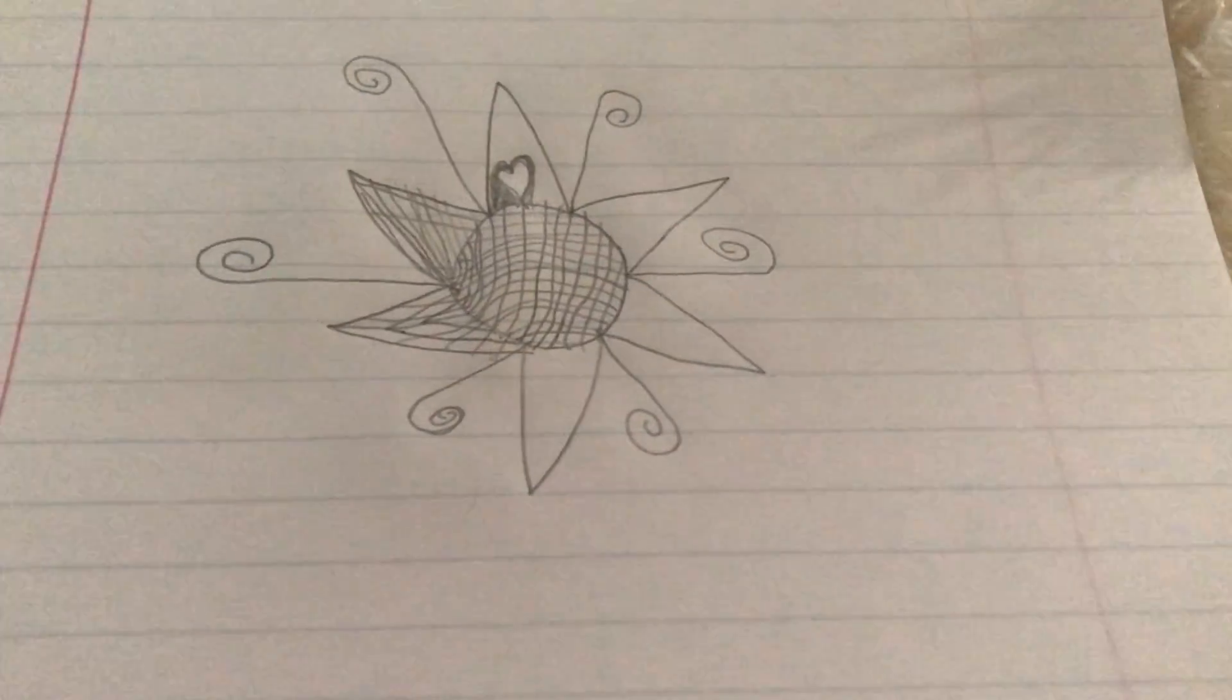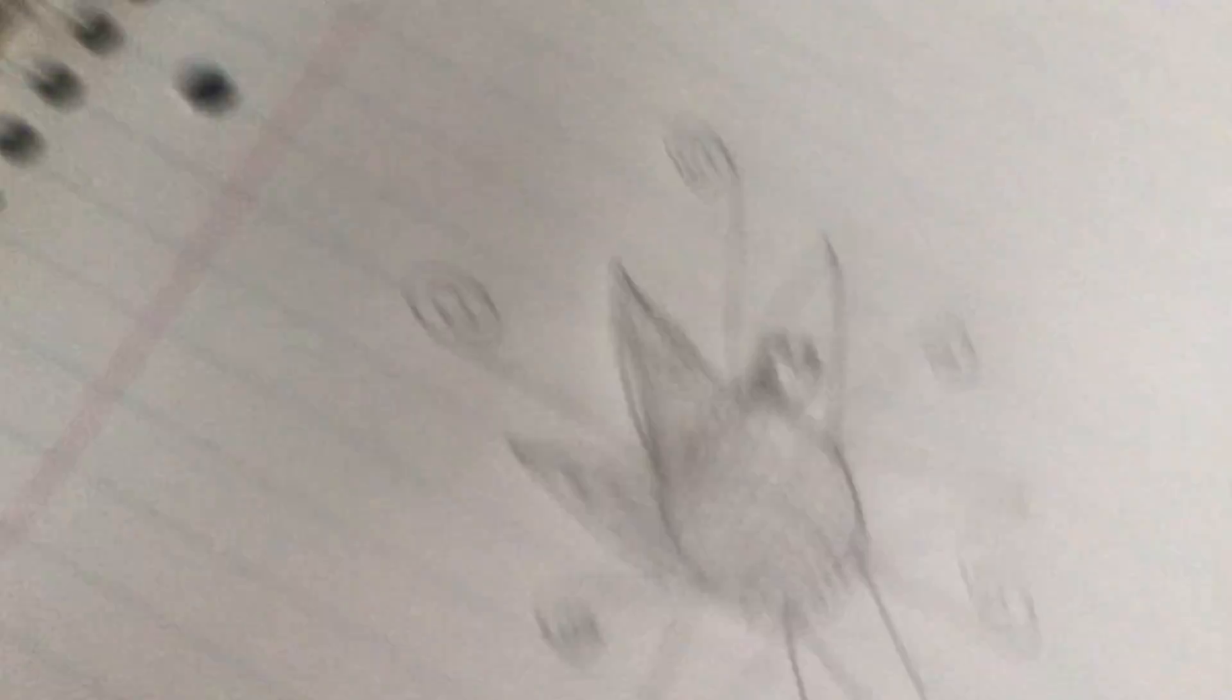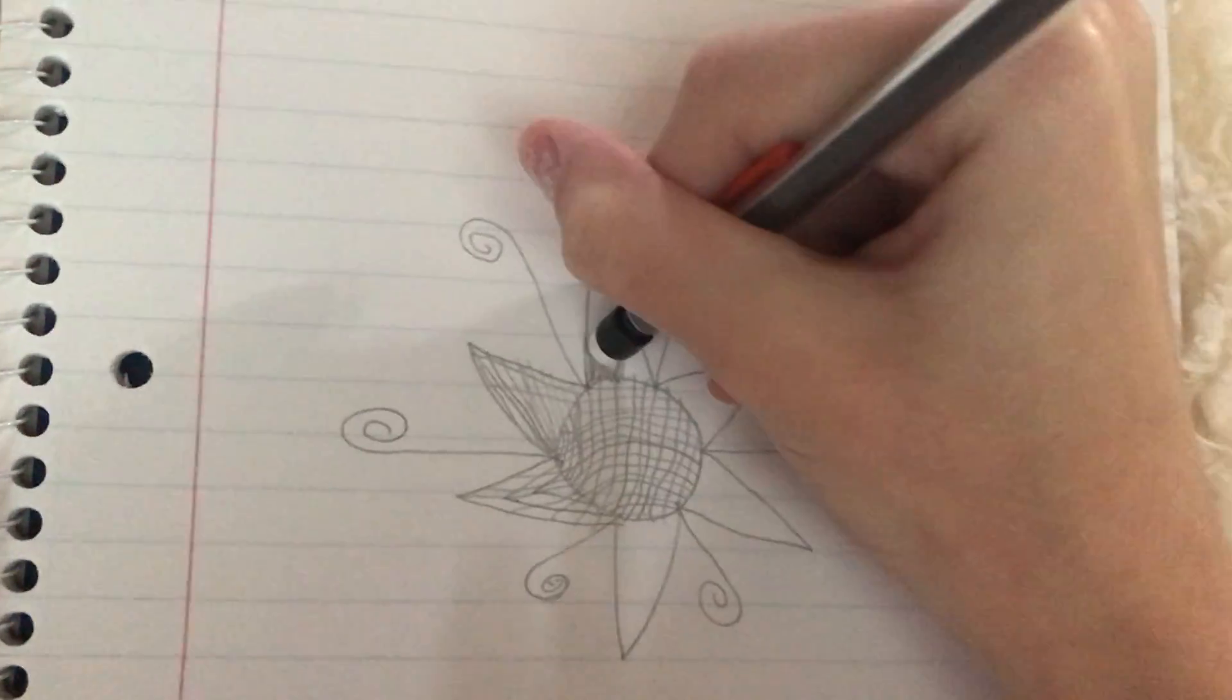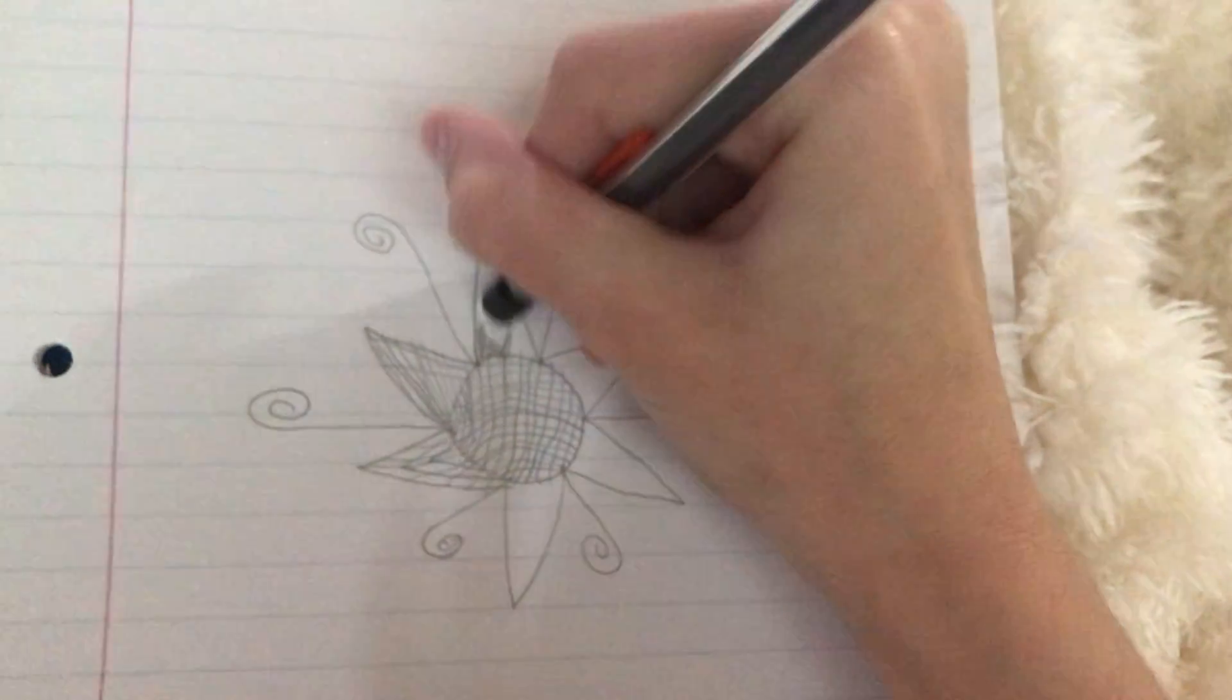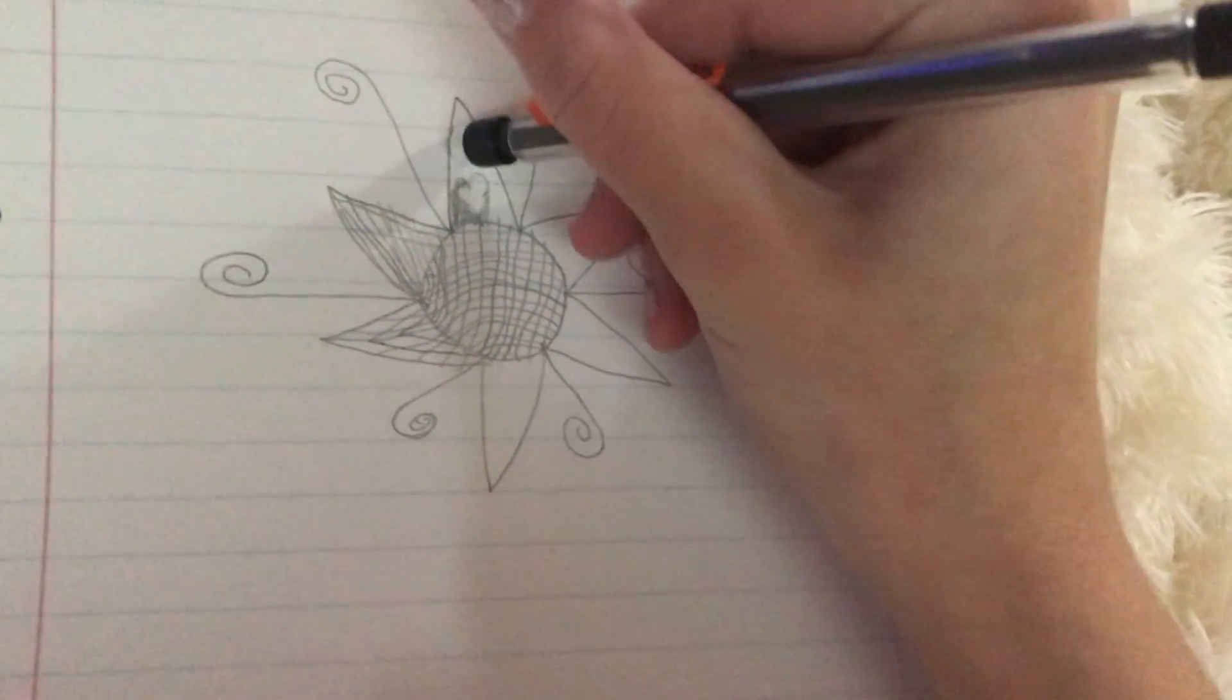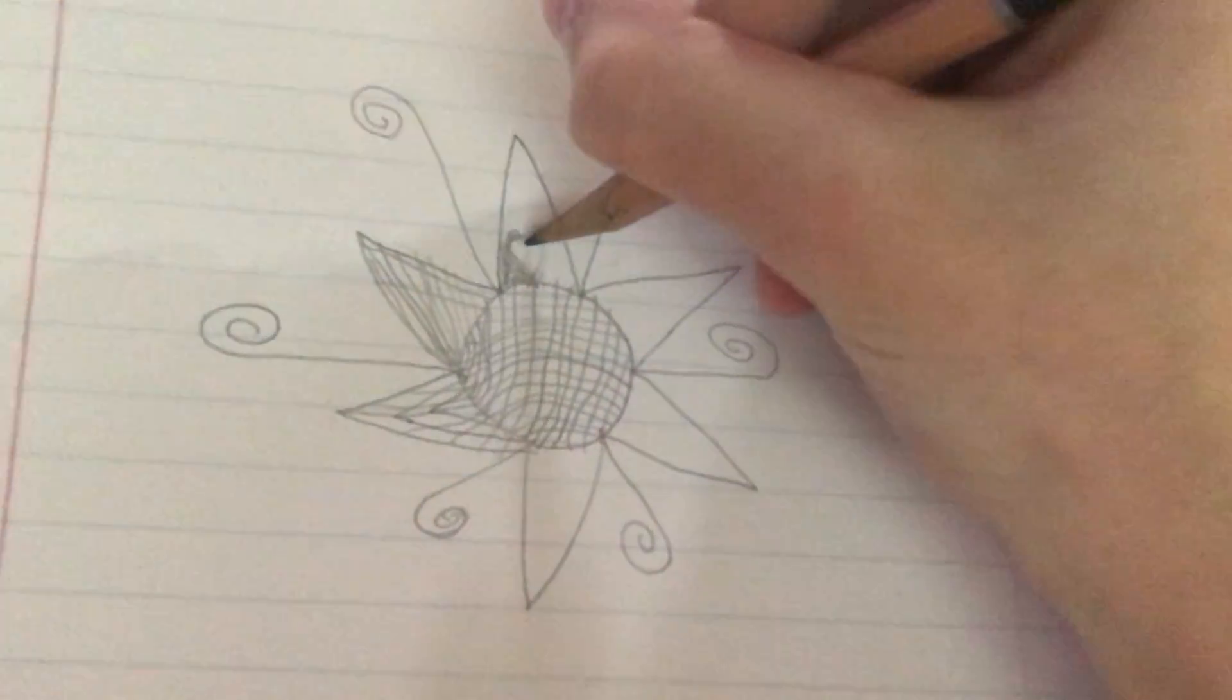So let me get an eraser or at least a pencil that can erase because this sucks pretty bad. Now we're taking a mechanical pencil and erasing. I'm not going to erase it fully because I'm just going to shade in this flower petal.